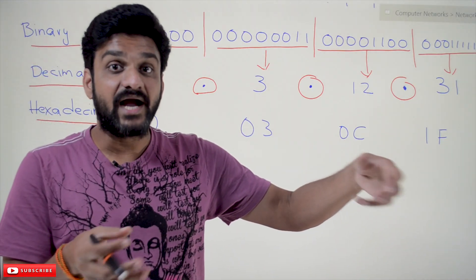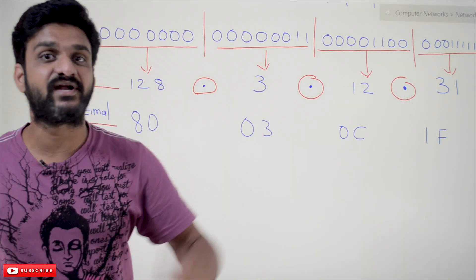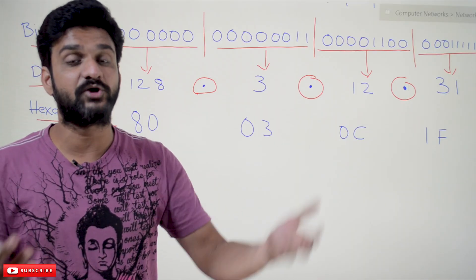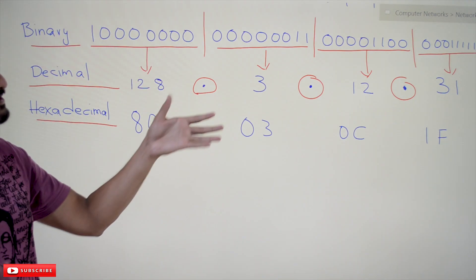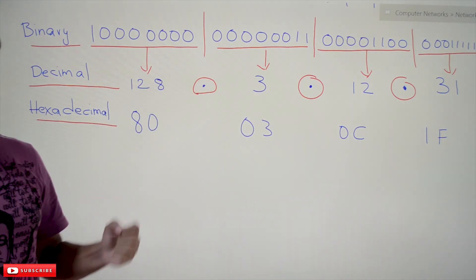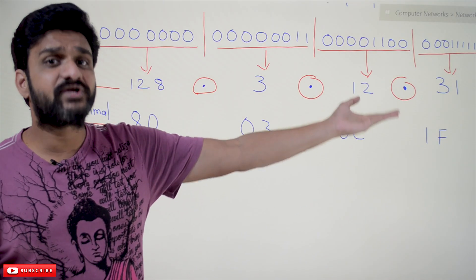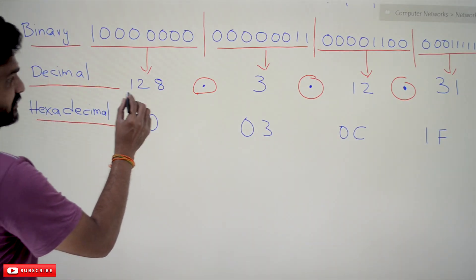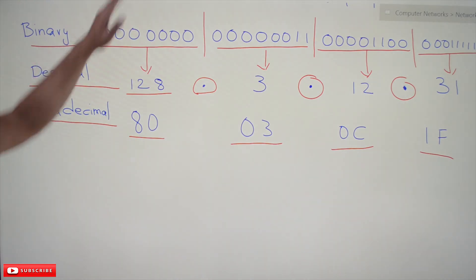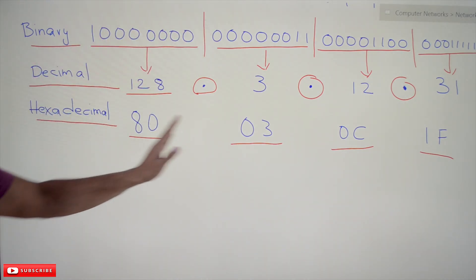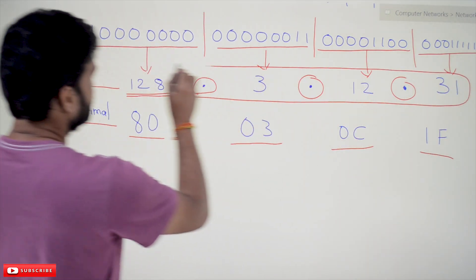This 32-bit IP address in decimal is represented by separating the groups with a dot: 128.3.12.31. Instead of remembering that large binary number, you simply say 128.3.12.31. The hexadecimal representation would be 80.03.0C.1F, but in our course we will mostly use decimal notation.